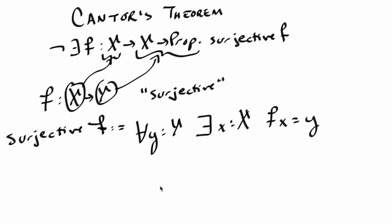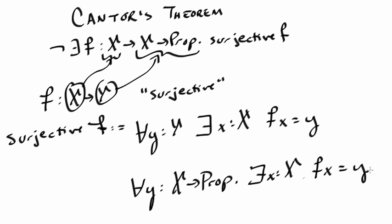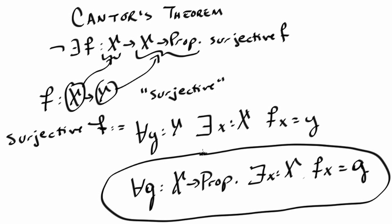So in the particular case of Cantor's Theorem, a surjective f would satisfy for all y in X arrow Prop, there exists an x in X such that f of x equals y. Now note that this is a function type X arrow Prop. So let's use the name g for this bound variable. The names of bound variables don't matter so we'll just rename it to g. g is the kind of name we often use for a function. So when we try to prove Cantor's Theorem we'll assume we have a surjective f, so that means it will satisfy this, and we'll need to apply that assumption with an appropriate function g from X to Prop. So what function g should we use?